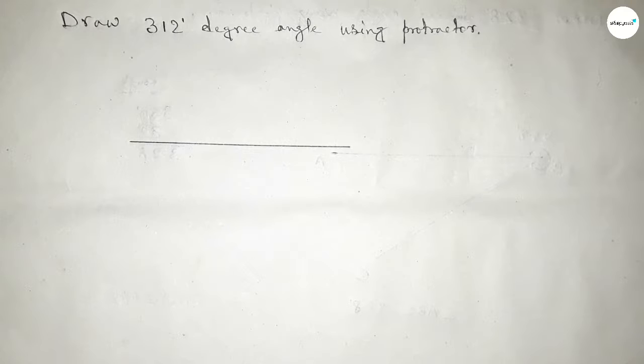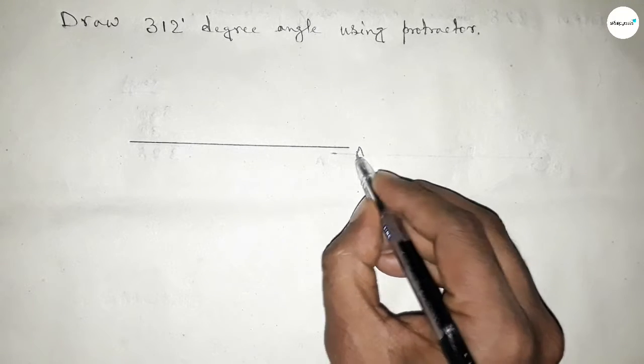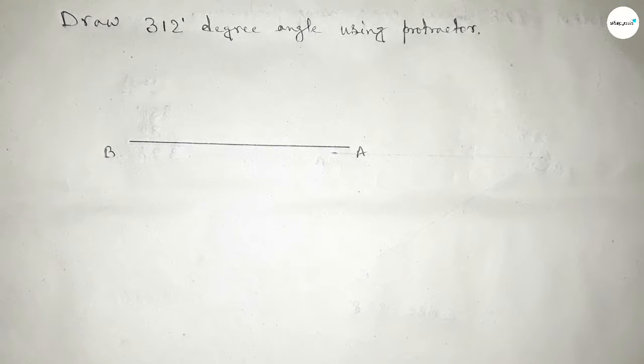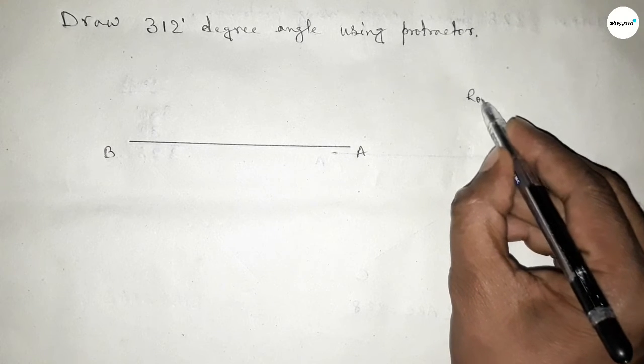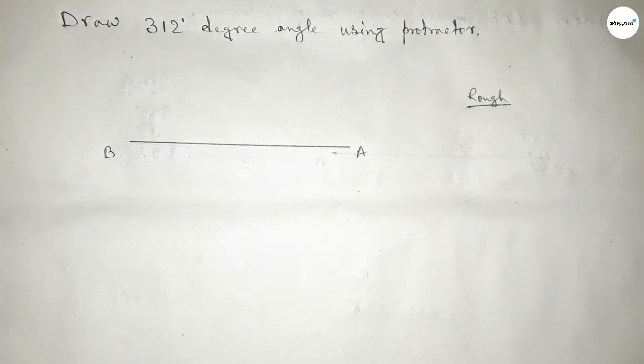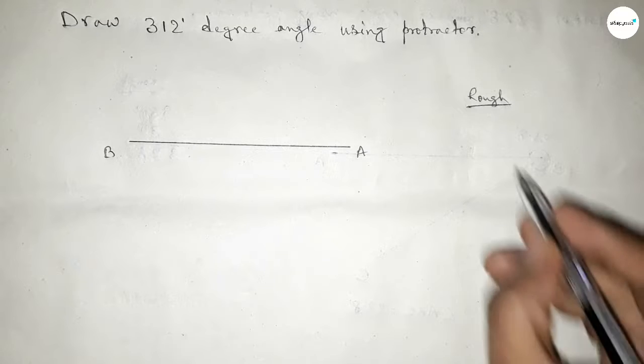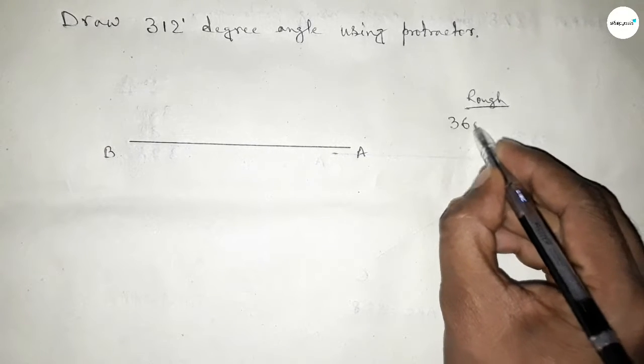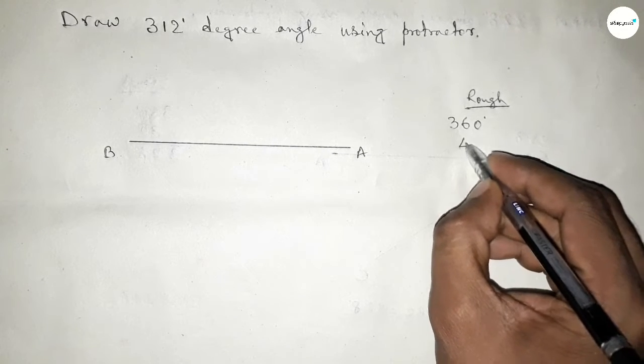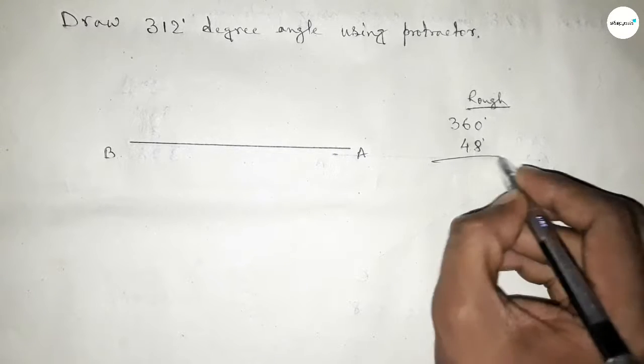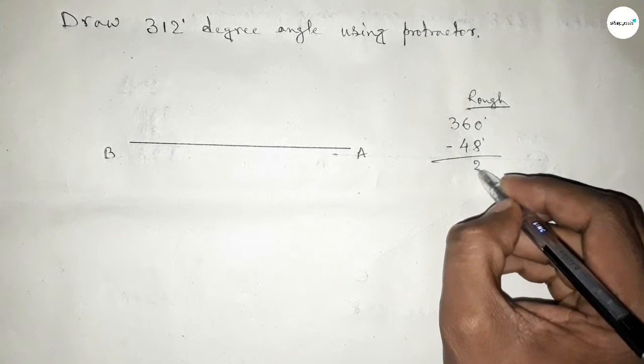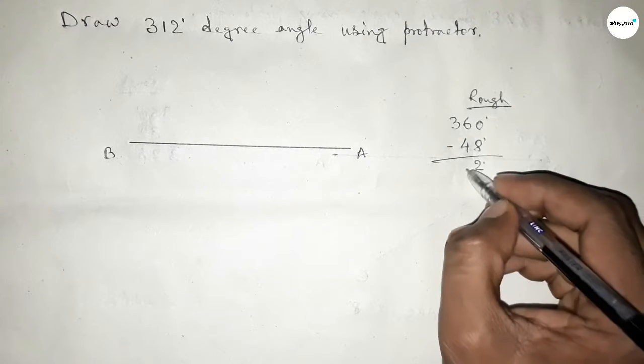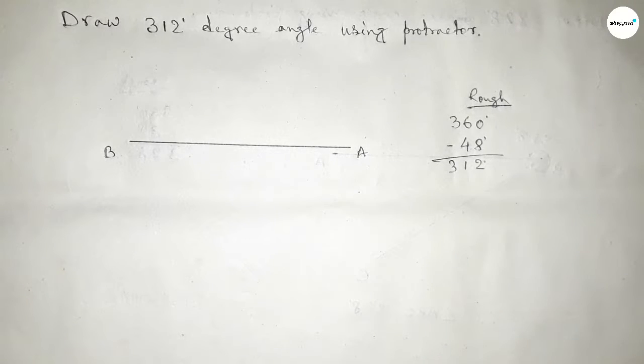First, drawing a straight line. Next, taking here point A and this side point B. Now, roughly discussing some important calculation here. If we subtract 48 degree angle from 360 degrees, then we can get 312 degree angle. So subtracting 48, the result is 312 degree angle.